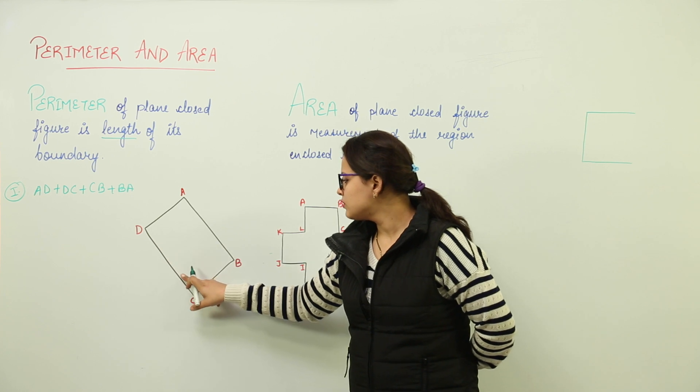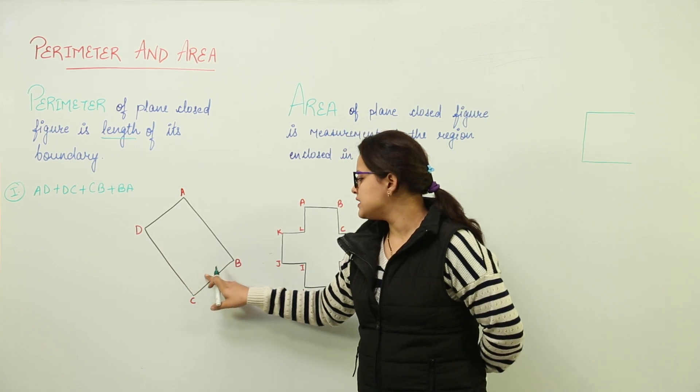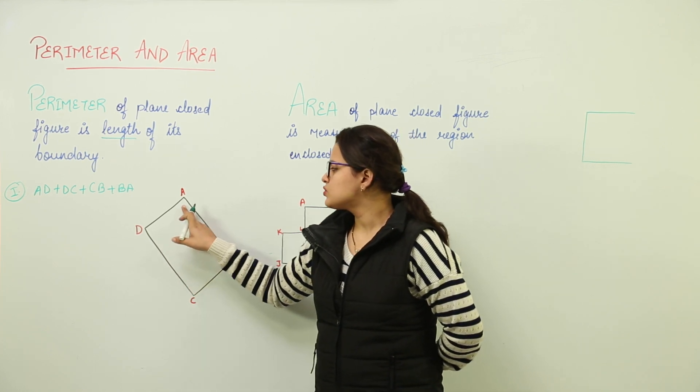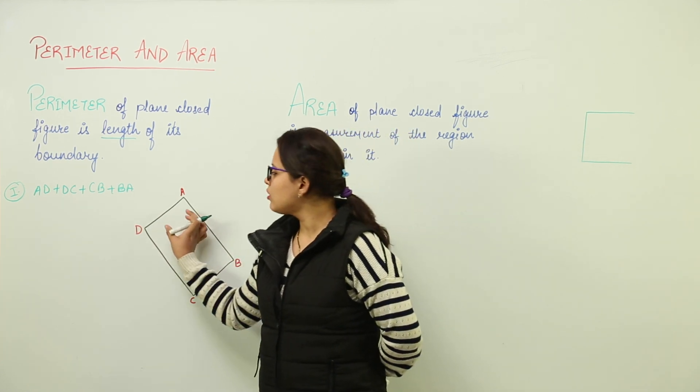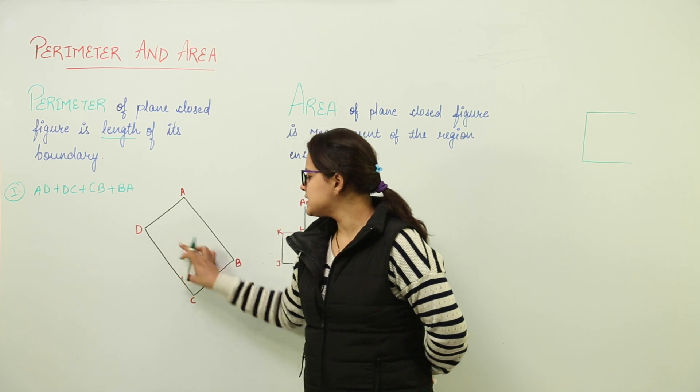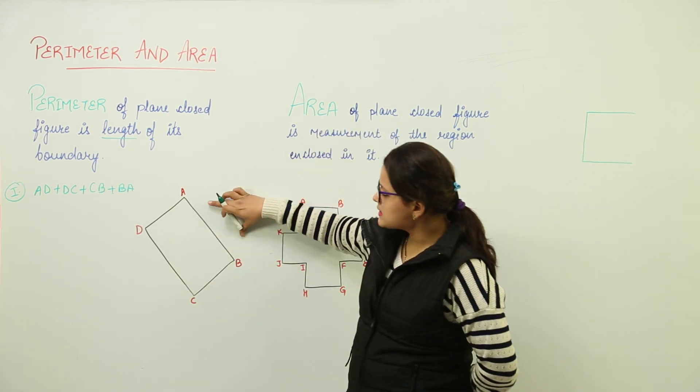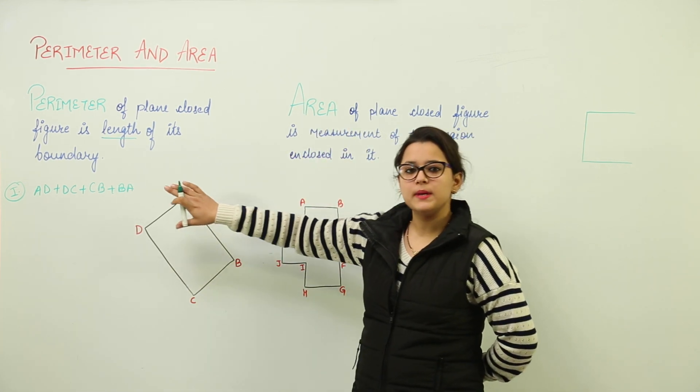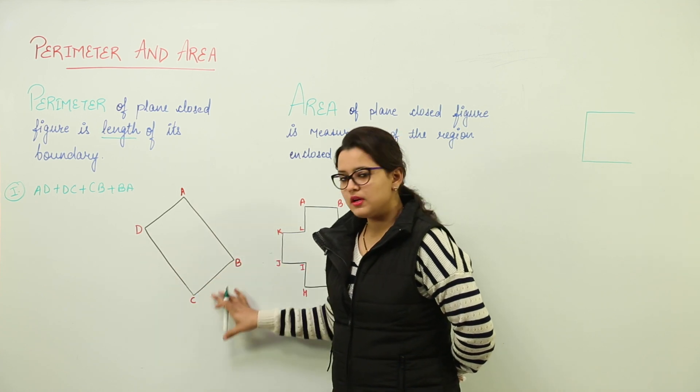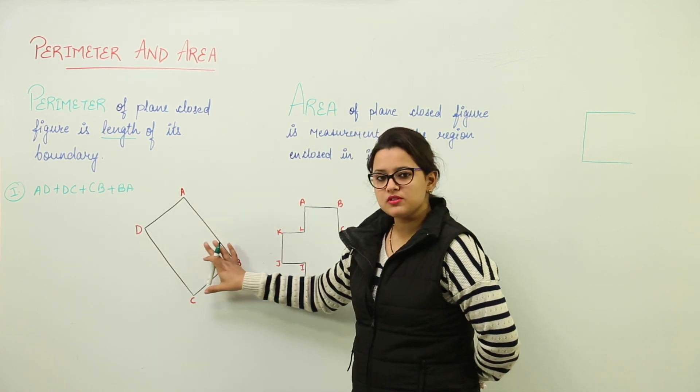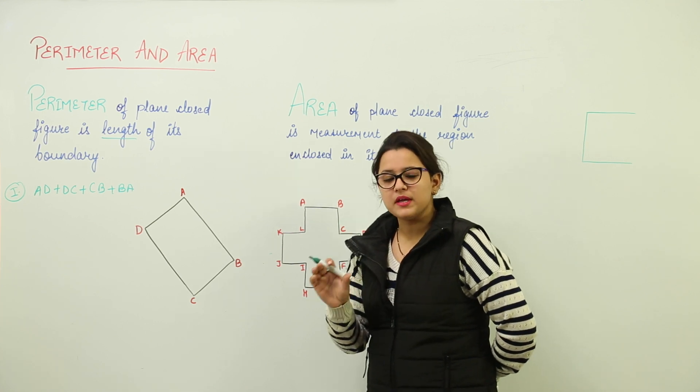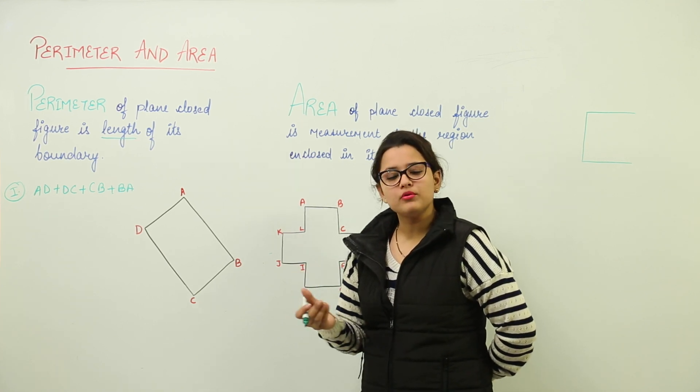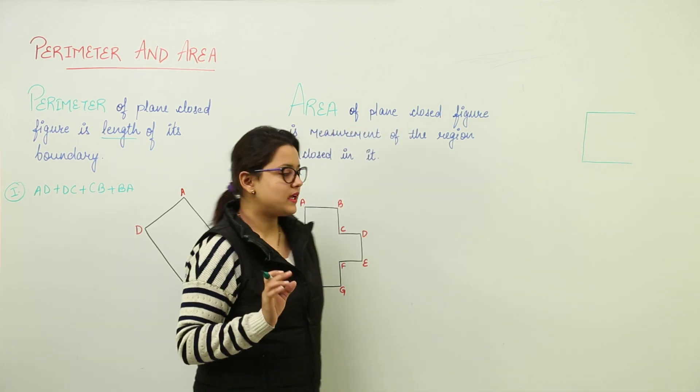Again, from D to C and then from C to B and B to A. So, what is the length of the boundary of this shape? The length will be total of AD plus DC plus BC plus BA. So, that is the perimeter of this shape. We are not considering what shape is it right now. I am just trying to explain what is perimeter. Perimeter is length of boundary of whatever shape it is.